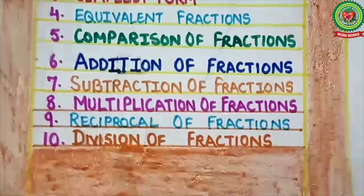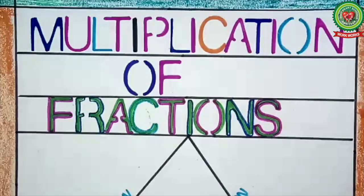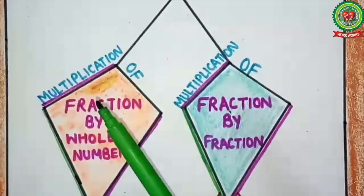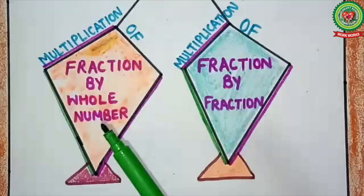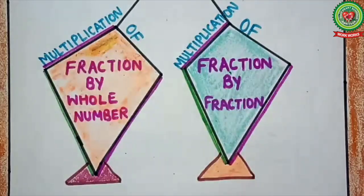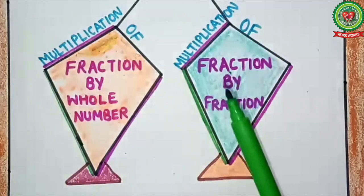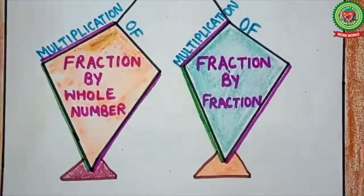Multiplication of fractions are of two types. Type 1: multiplication of a fraction by a whole number. Type 2: multiplication of a fraction by a fraction.